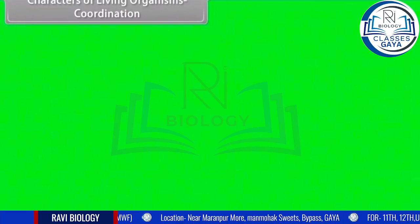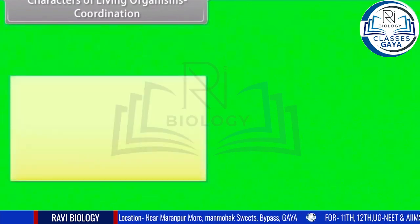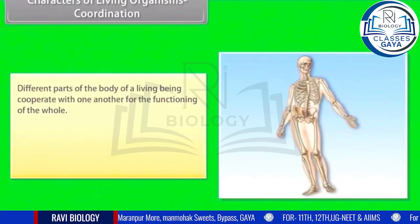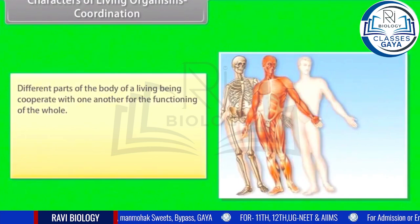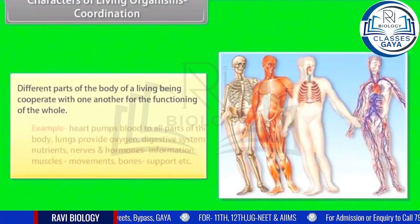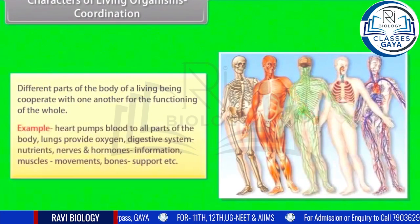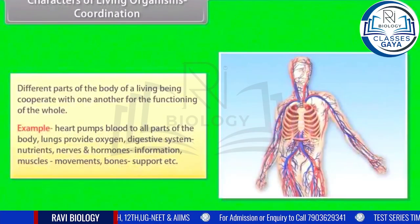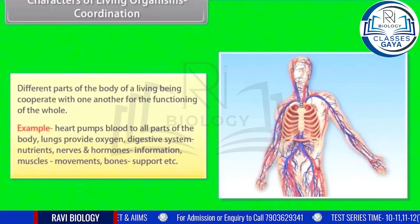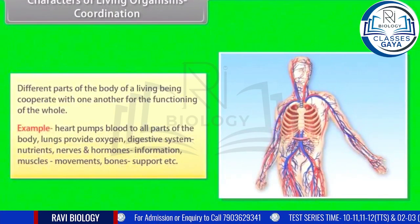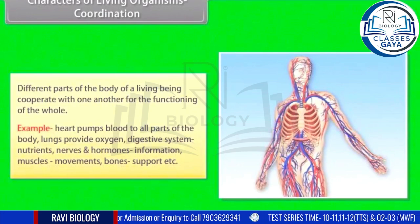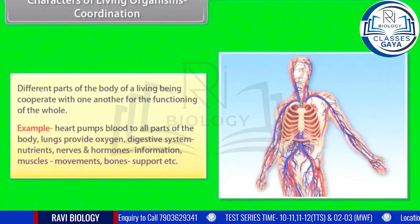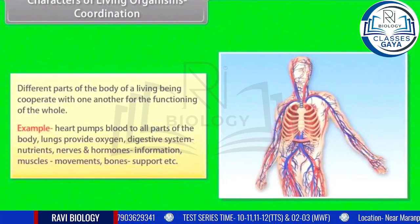Characters of living organisms — Coordination: different parts of the body of a living being cooperate with one another for the functioning of the whole. For example, the heart pumps blood to all parts of the body; lungs provide oxygen; the digestive system provides nutrients; nerves and hormones carry information; muscles enable movements; and bones provide support.